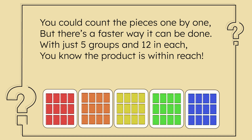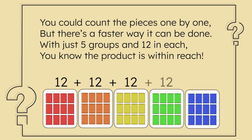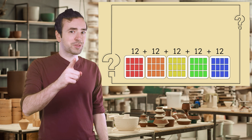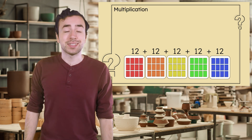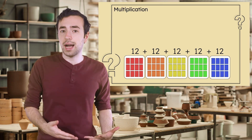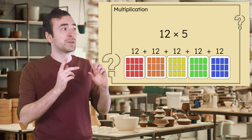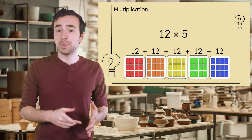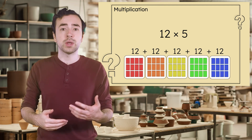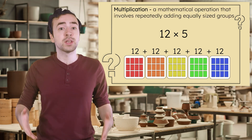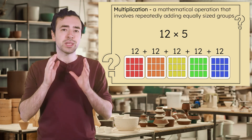We could count all the pieces one by one, or we could use addition, right? There are 12 here, 12 more here, and so on. So we could record 12 plus 12 plus 12 plus 12 plus 12. But isn't there a different way to show that we're adding equal groups like this? That's right — multiplication. Since we're adding 12 a total of 5 times, we can also record this as 12 times 5. That's because multiplication is really just a faster way of doing repeated addition. It's an operation that involves repeatedly adding equally sized groups.